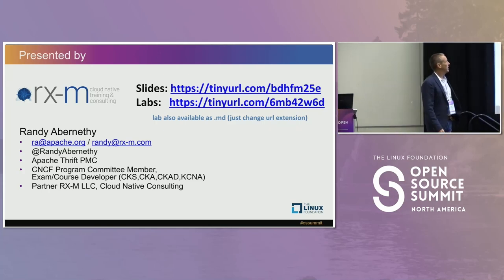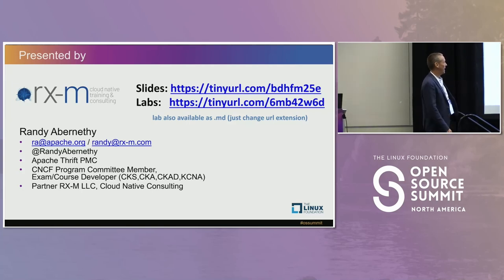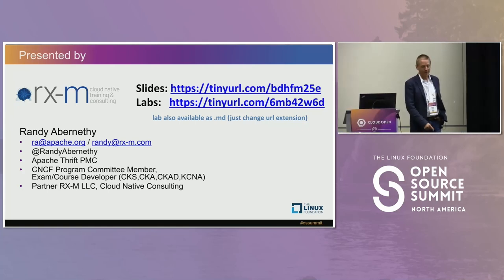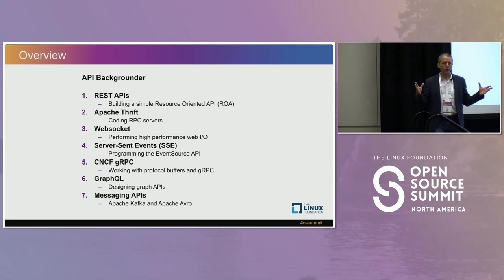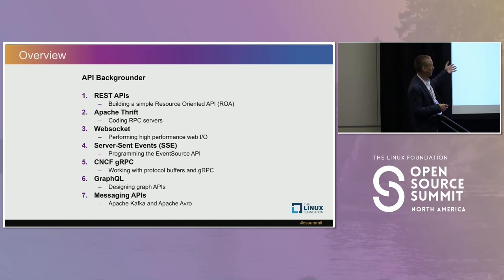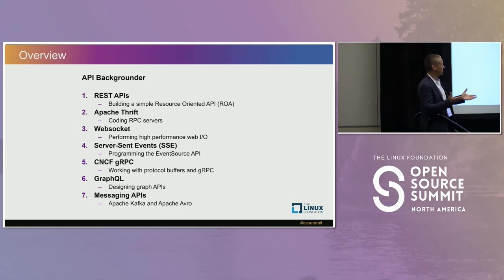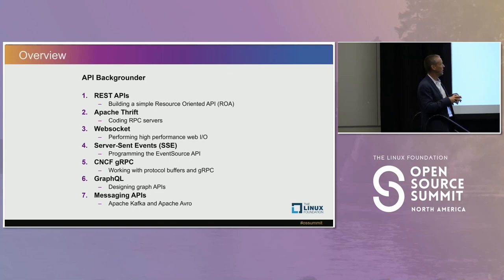I work with a company called RxM — a cloud-native training and consulting shop. I've been involved with API stuff for quite a while, and really got enamored with Apache Thrift probably a good 10 years ago, maybe longer. We're going to talk about the big-picture API background — what do you need out of an API, what are some traits of a good API — then take a look at a bunch of representative technologies covering somewhere between 50 and 90 percent of what you'd actively run into in commercial use.